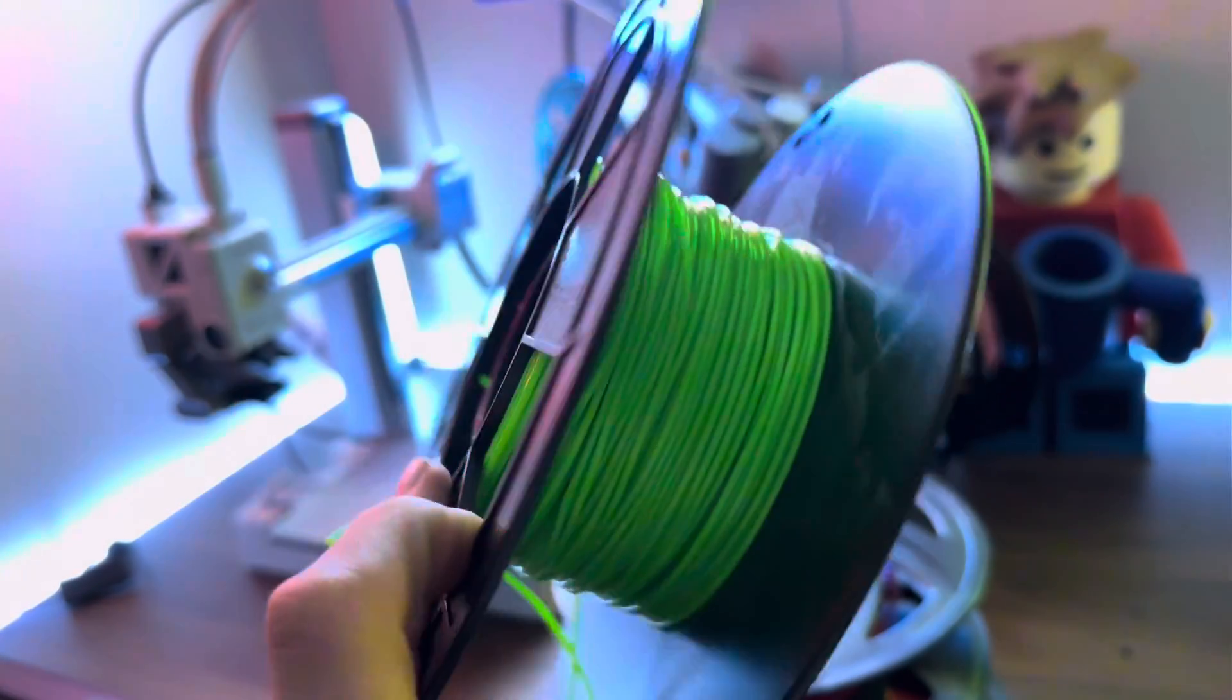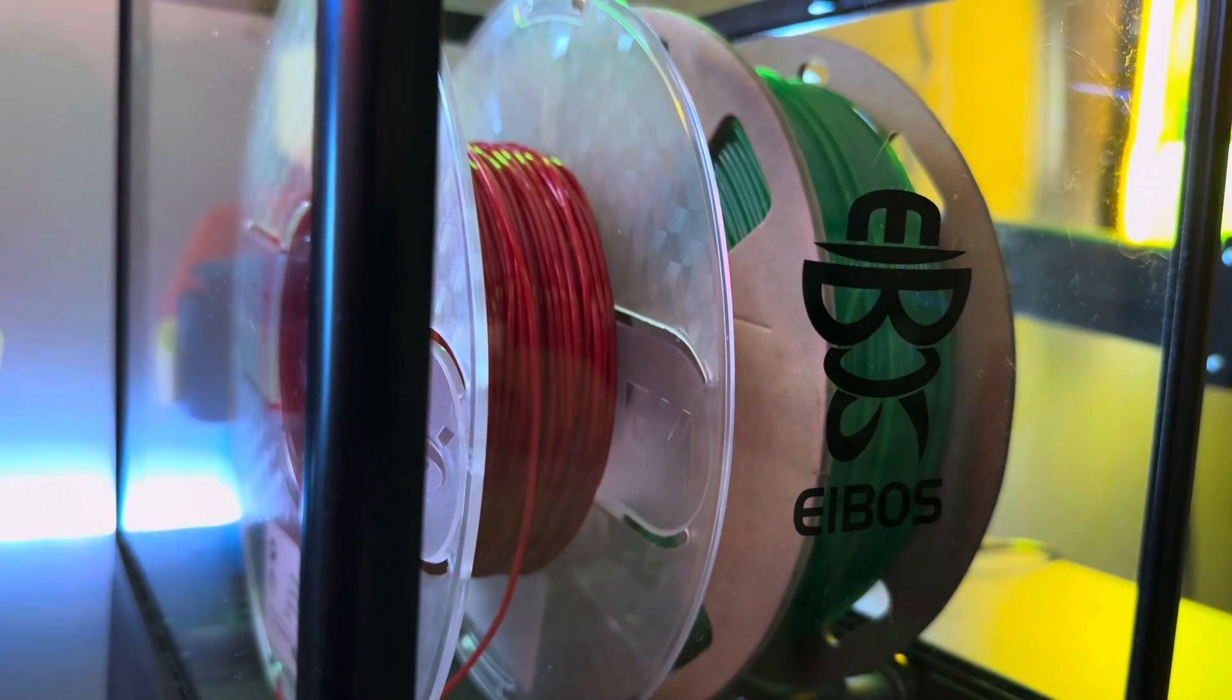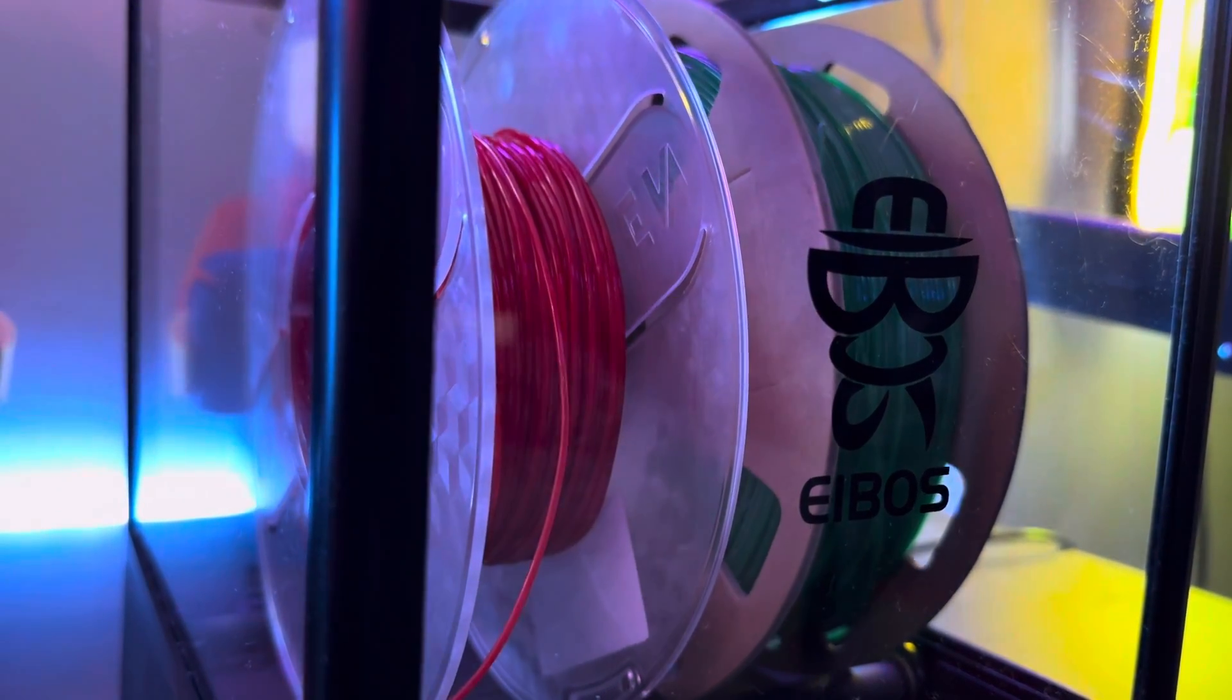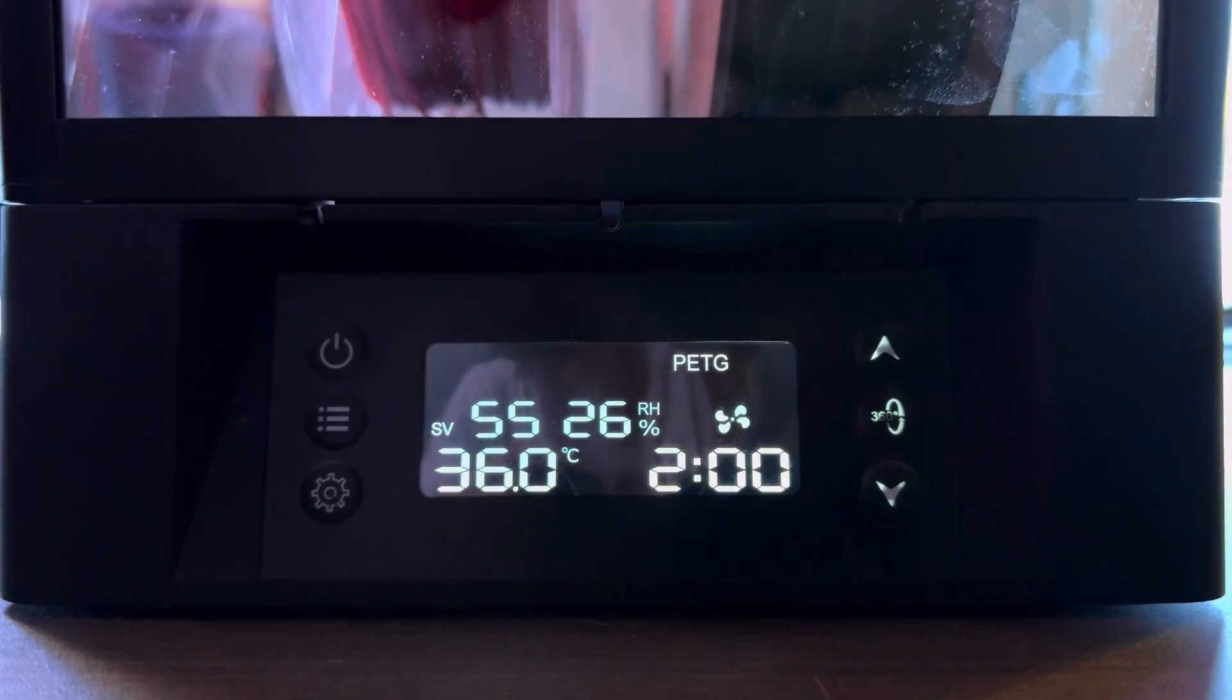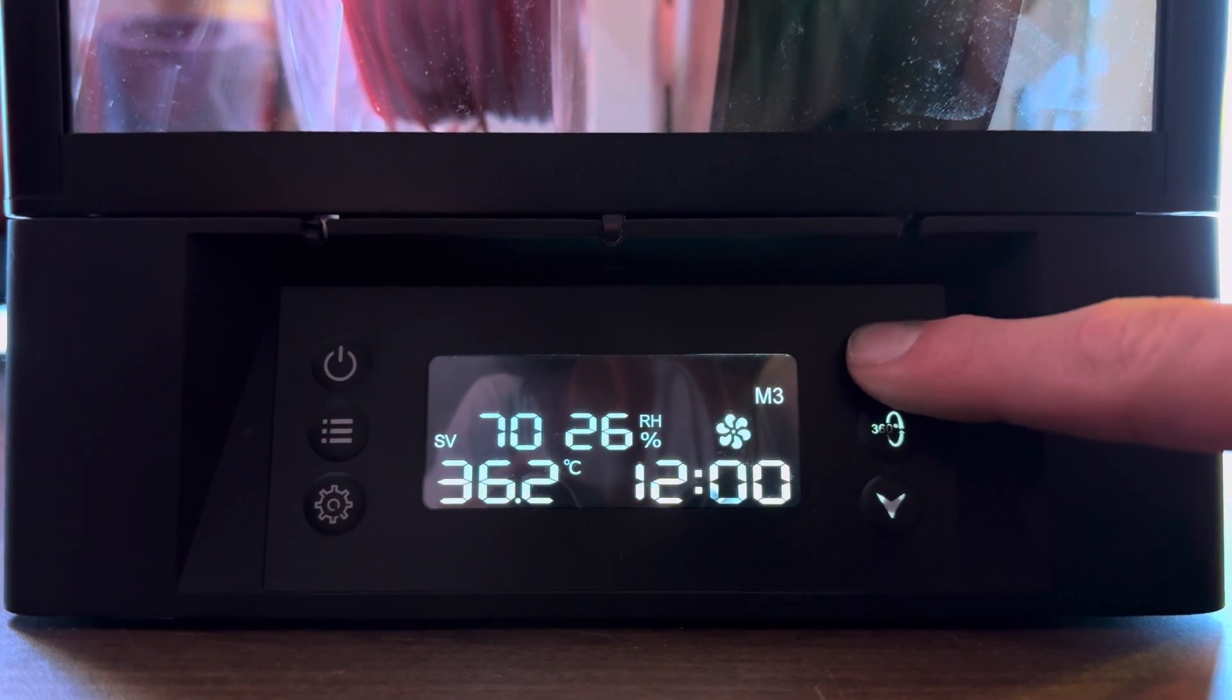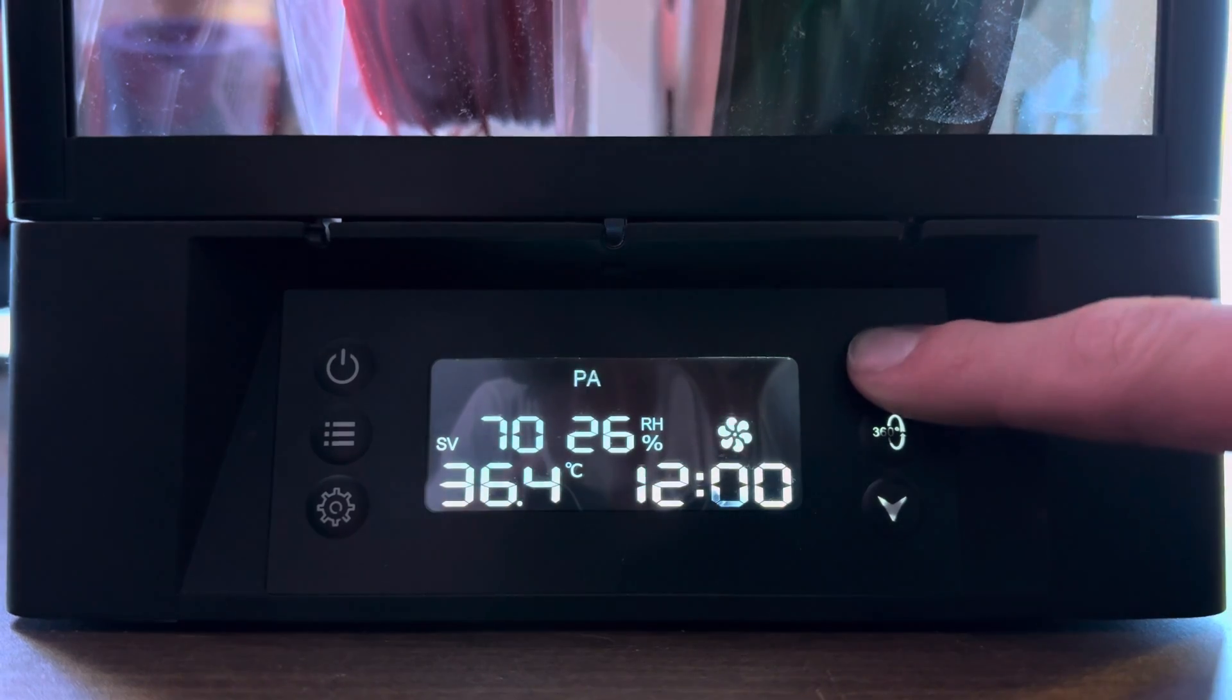And I've been using this dryer for a little while now, and it works really well because it rotates the rolls as they're drying. It has a ton of different modes and presets for all the filaments, so it's super easy to dry them. And I would highly recommend you check this out if you're new and getting into 3D printing and thinking about printing some of the hydroscopic filaments like PETG, nylon, or TPU.